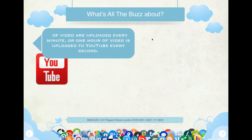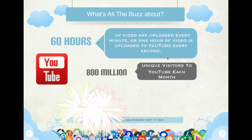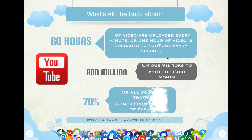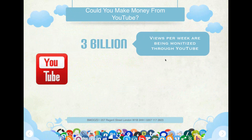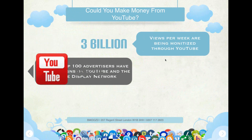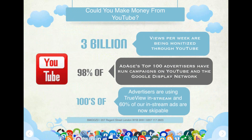What's all the buzz about? Sixty hours of video is uploaded every minute — or one hour of video uploaded to YouTube every second. There are 800 million unique visitors to YouTube each month. Seventy percent of all YouTube traffic comes from outside of the US. Could you make money from YouTube? Three billion views per week have been monetized. Ninety-eight percent of AdAge's top 100 advertisers have run campaigns on YouTube and the Google Display Network, and 60% of all in-stream ads are now skippable.